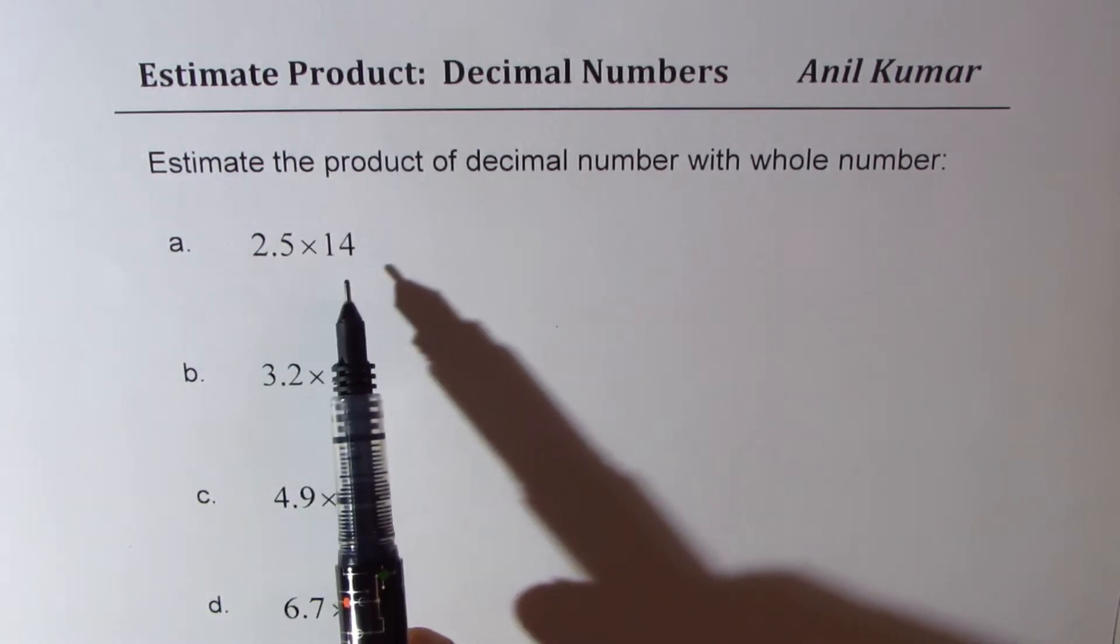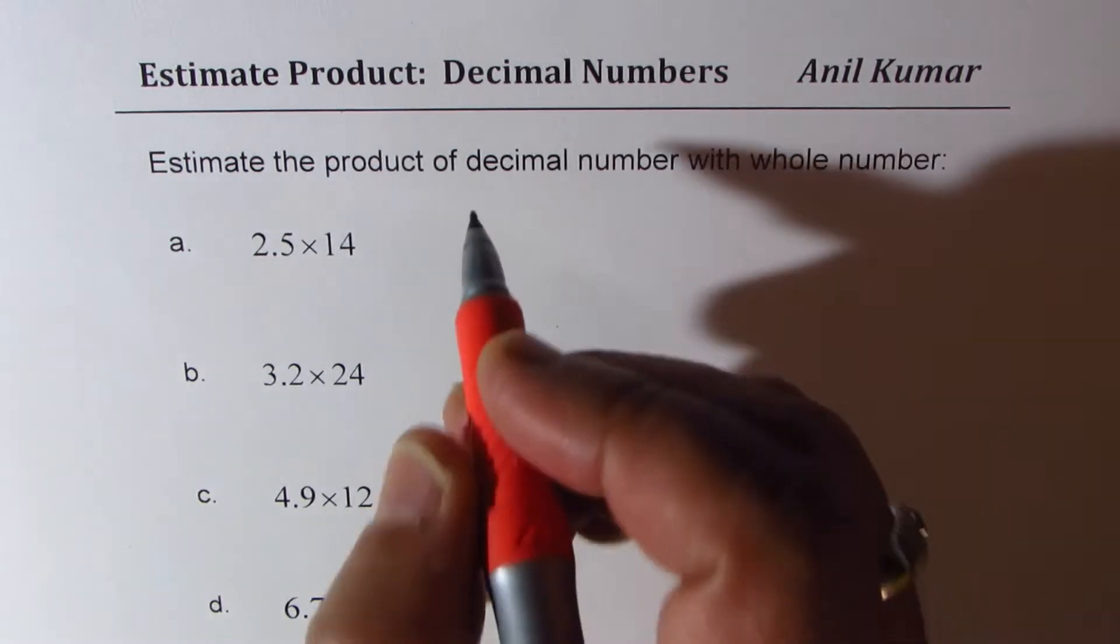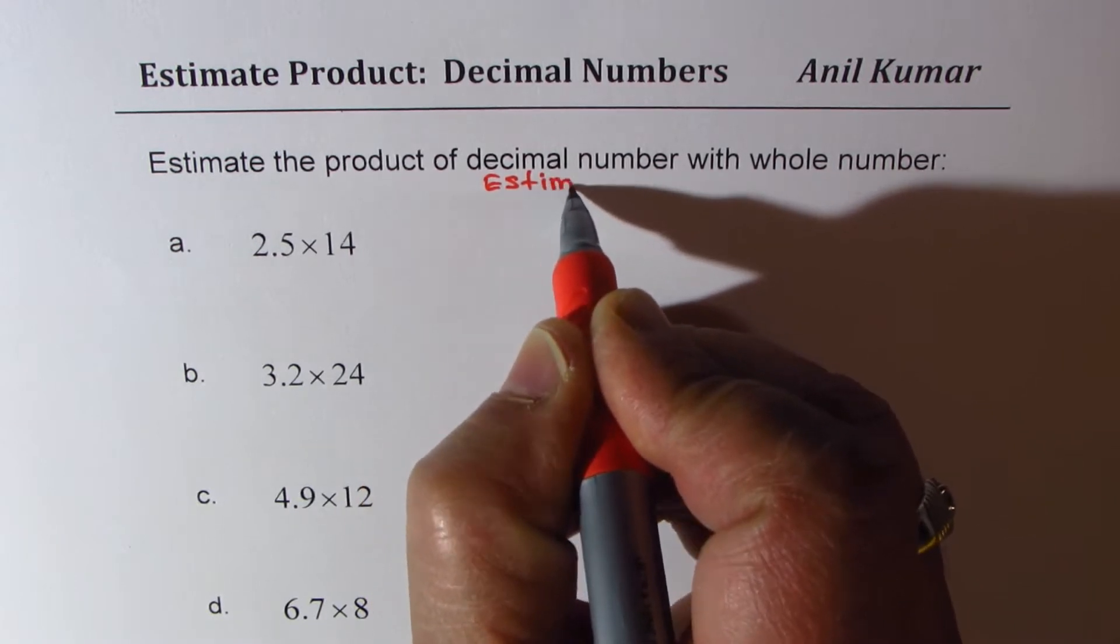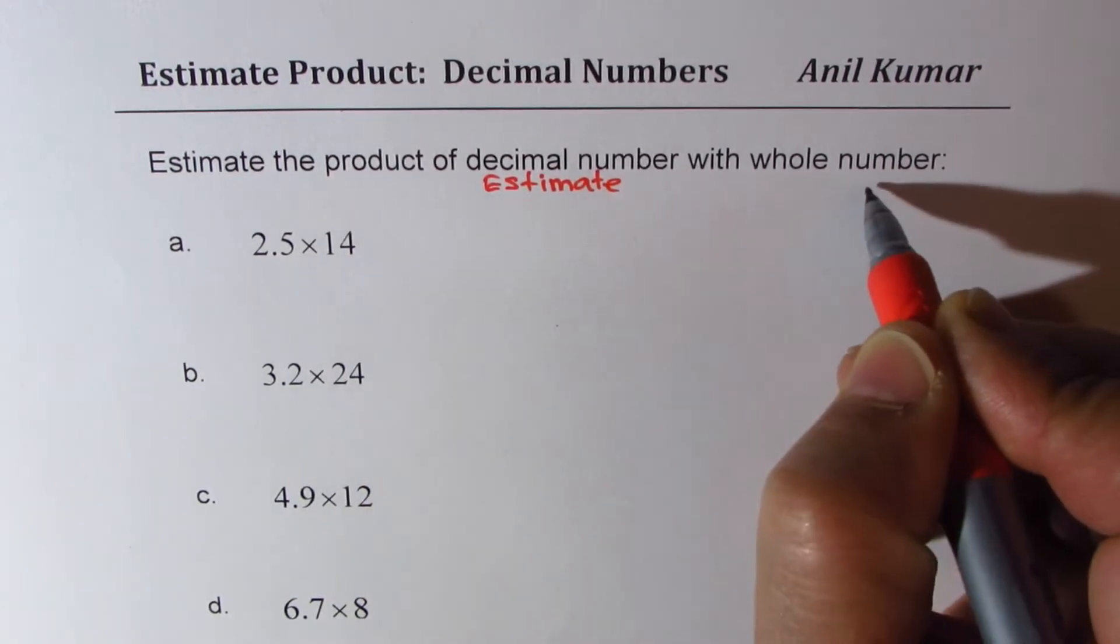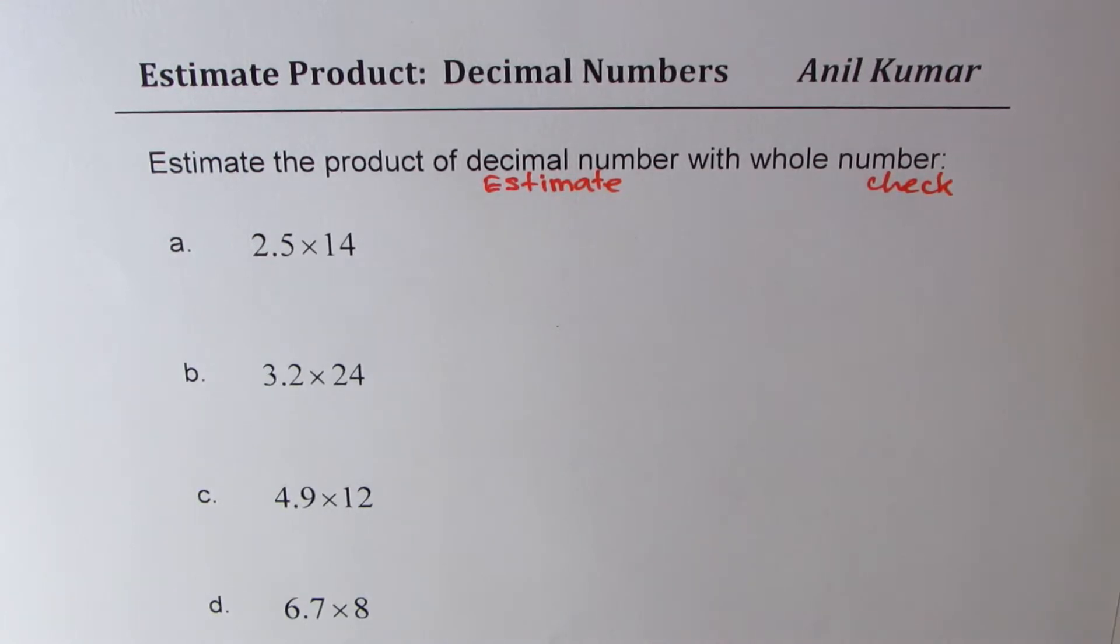2.5 times 14, 3.2 times 24, 4.9 times 12, 6.7 times 8. This is what you need to estimate. So let's first estimate. We'll also check using calculator how good our estimate was.